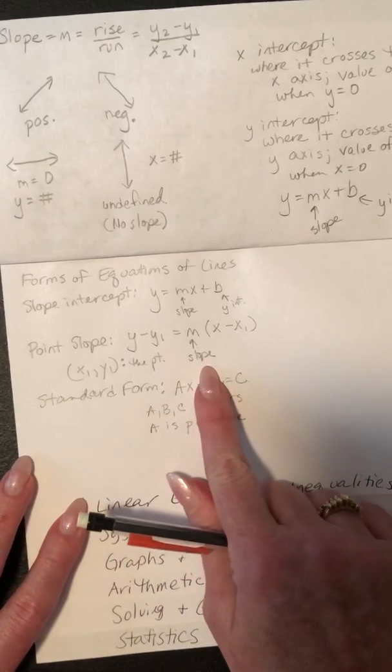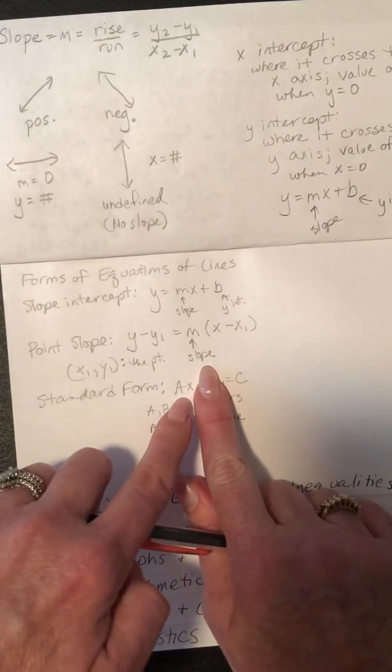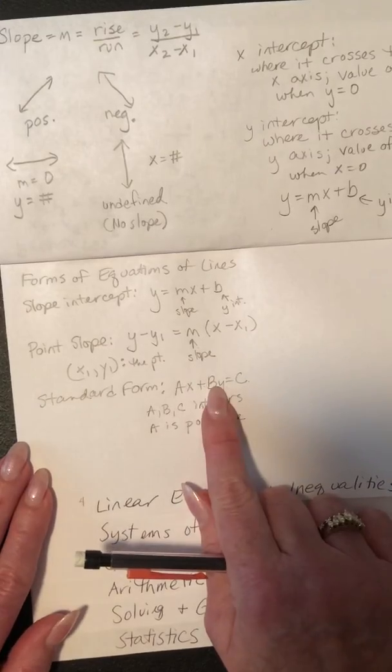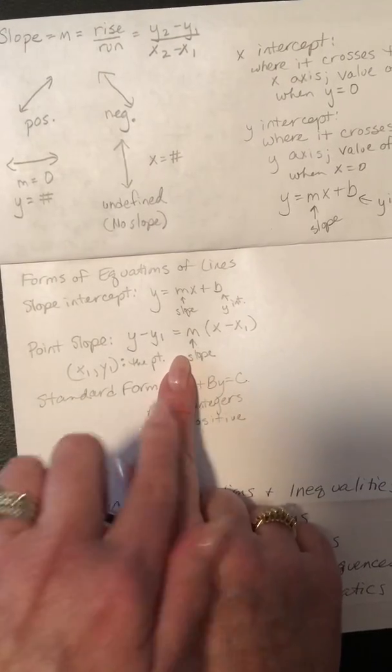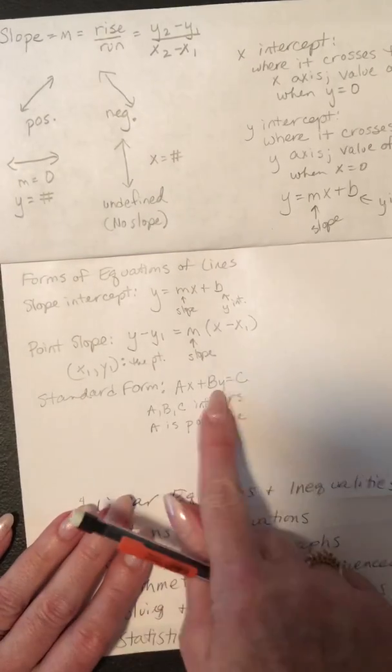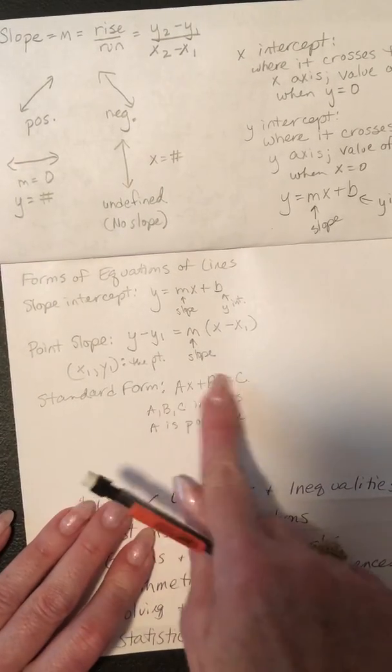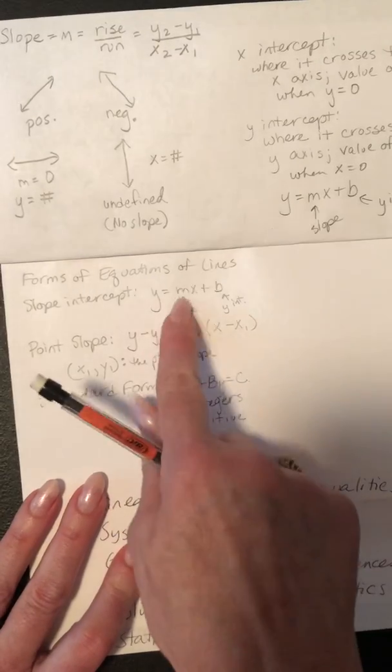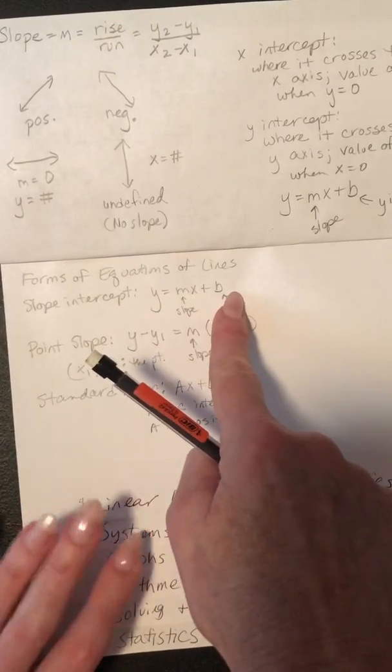And then if you want to know the y-intercept, put it in 0 for x, and you could find the y-intercept. And then you put those two dots and connect the dots, extend, put arrows, and it's a really easy way to graph if it's in standard form. But I think most of y'all like that form the best.